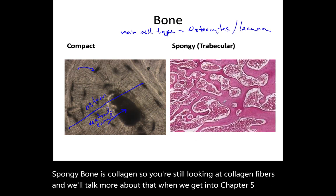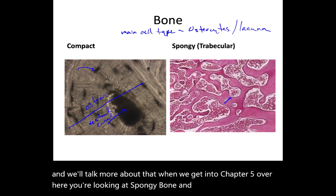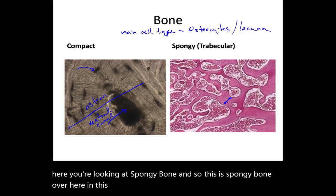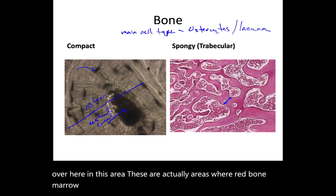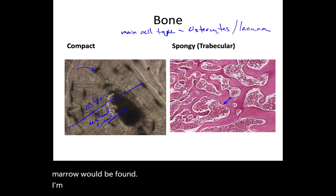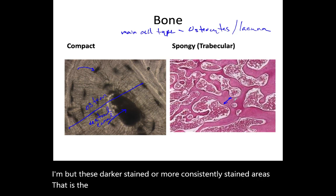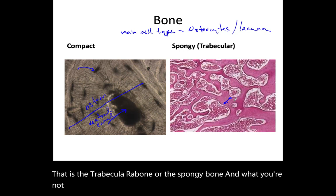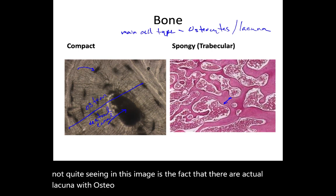Over here you're looking at spongy bone. These areas are where red bone marrow would be found. The darker, more consistently stained areas are the trabecular bone — the spongy bone. What you're not quite seeing in this image is that there are actual lacunae with osteocytes present within it.